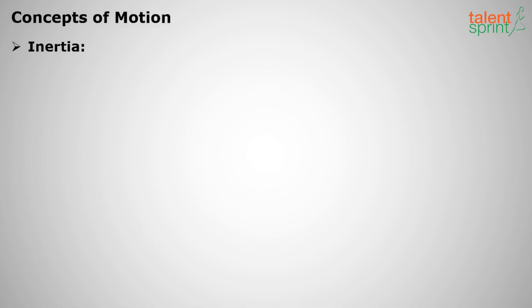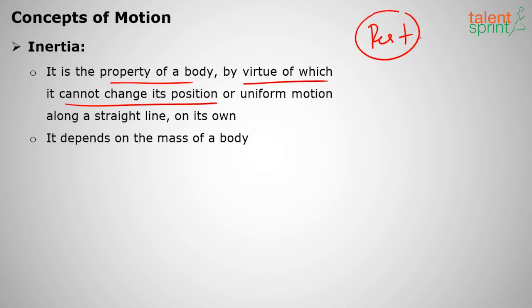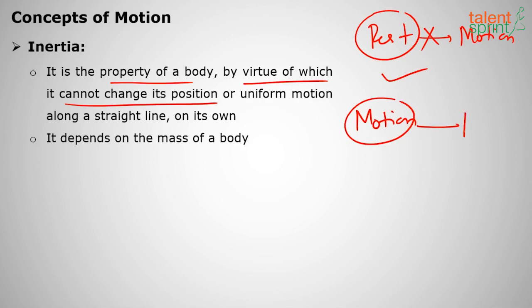First is inertia. So what is inertia actually? Inertia is a property of a body by virtue of which it cannot change its position. If I am at rest, I can't change that position to motion — this is called inertia of rest. If I am moving, I can't change my position to rest — this is called inertia of motion.